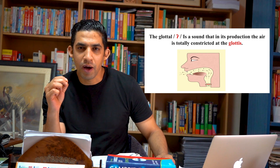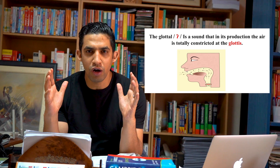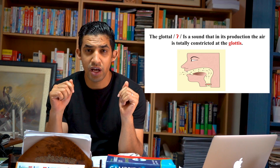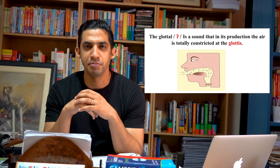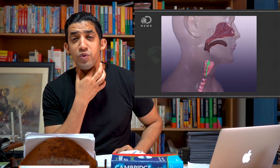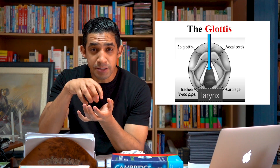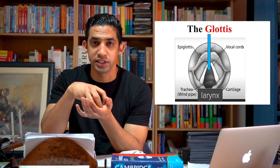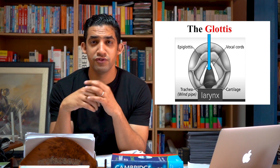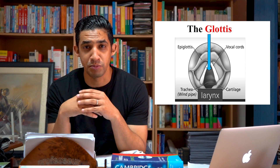The glottal sound is produced by a sudden shutting and opening of the glottis, and it is transcribed as [ʔ] in IPA. When we produce speech, we initiate air from the lungs; it travels through the windpipe and through the larynx. Within the larynx there is a space surrounded by the vocal cords — that space is exactly what we call the glottis.